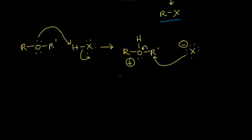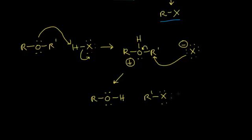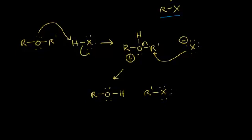This is why bromide anions and iodide anions work better than chloride anions. As a result of that nucleophilic attack, we now have our alcohol, with an extra lone pair of electrons on our oxygen. And our R-prime group is now bonded to our halogen, so we've made our first alkyl halide. And sometimes the reaction will stop here.